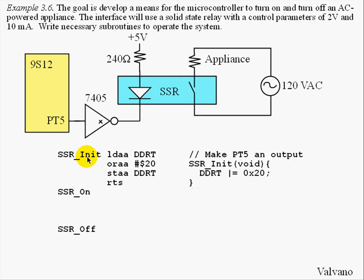The initialization will set the direction register to high by setting bit 5 of DDRT. To do that in a friendly way, we can use the OR instruction. If we were writing in C, it might look like this — the OR function is a friendly way to set bit 5.